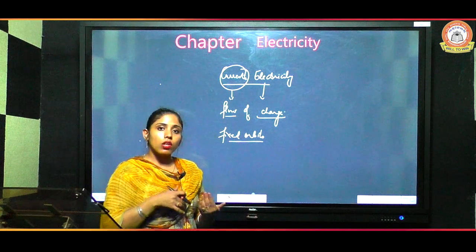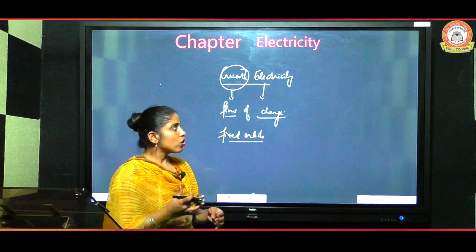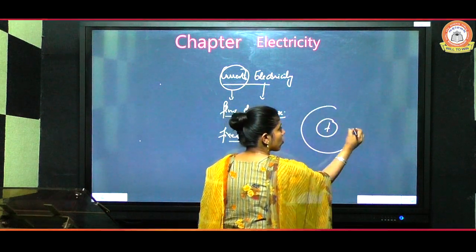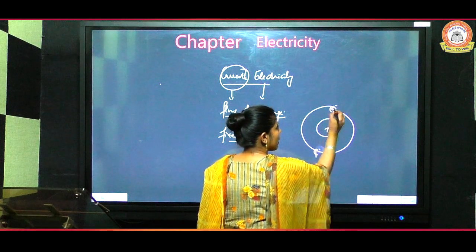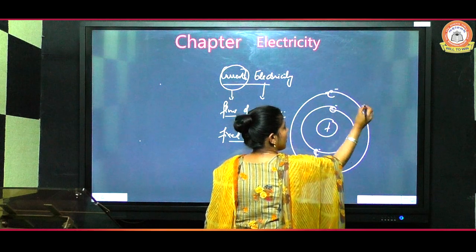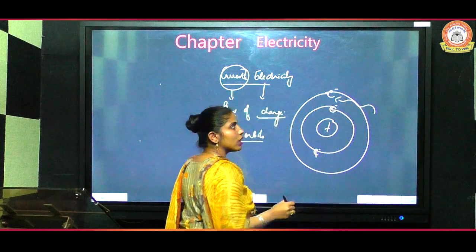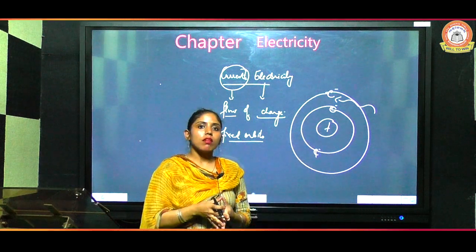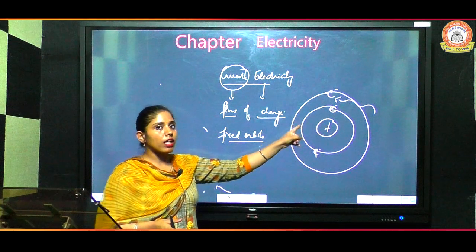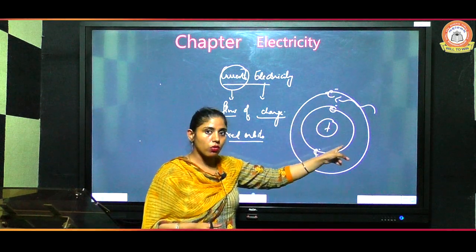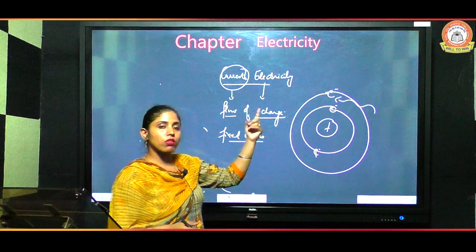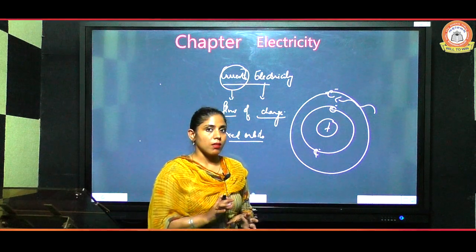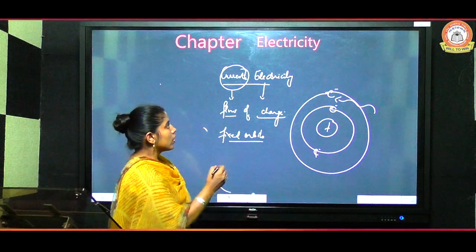If electrons have to go out of the atom they have to gain energy, and if they have to come to a lower state they have to lose energy. So if we want an electron to become free, we give it energy — it can then become free and show conduction. This means only electrons show conductivity, not protons and neutrons which are present inside the nucleus.